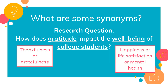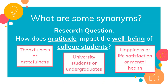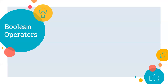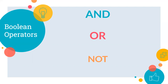You can try a thesaurus, but also think about the terms that your professors use when talking about your topic. Once you have a good list of keywords, it's time to use some search tools. Boolean operator is a helpful search tool that we use to link concepts in databases. The most common operators are AND, OR, and NOT. Here's a quick rundown of what they can all do.